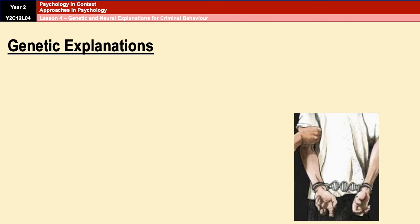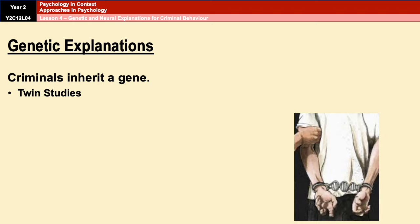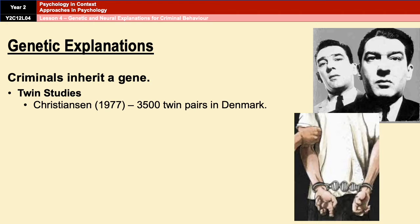Genetic explanations for crime suggest that offenders inherit a gene or some combination of genes that predisposes them to commit crime. The importance of genes is illustrated by twin studies. For example, Carl Christiansen in 1977 studied over 3,500 twin pairs in Denmark and found a concordance rate for offending behaviour of 35% for identical twins and 13% for non-identical twins.